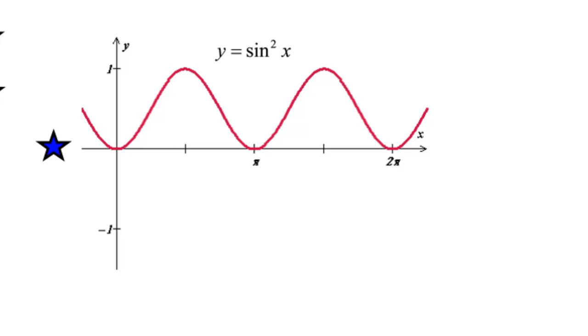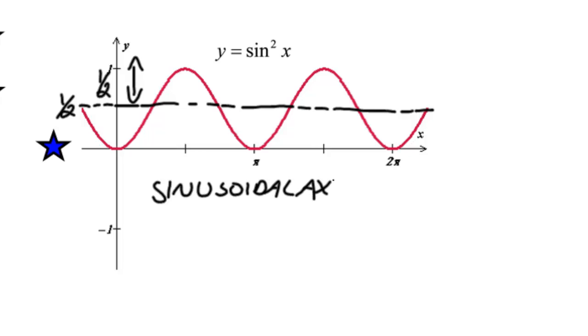Here, again, our sinusoidal axis is going to split the maximums and minimums at 1 half, giving us also an amplitude of 1 half. So, sinusoidal axis of 1 half, amplitude of 1 half.